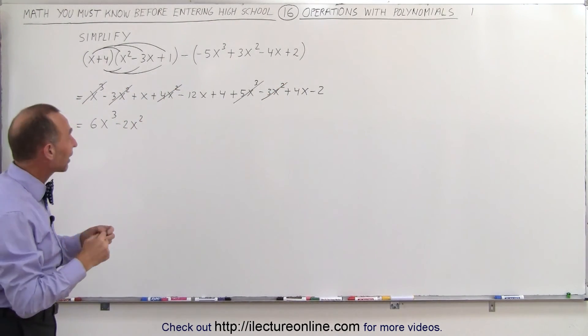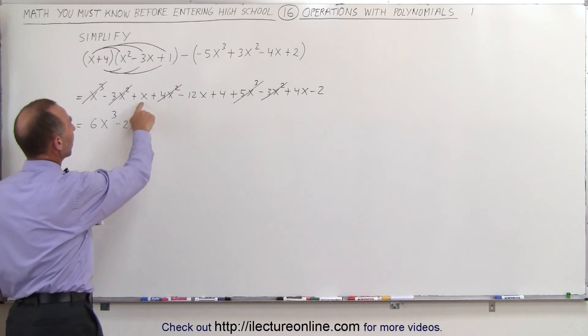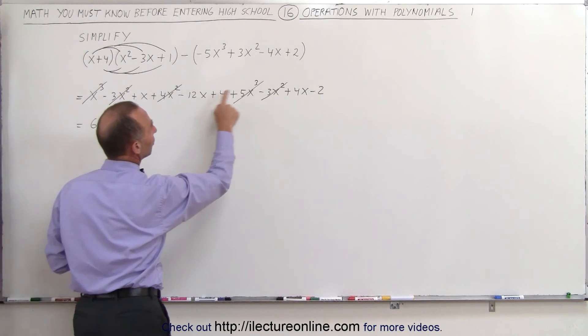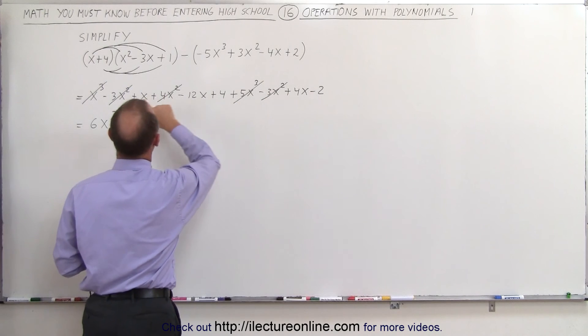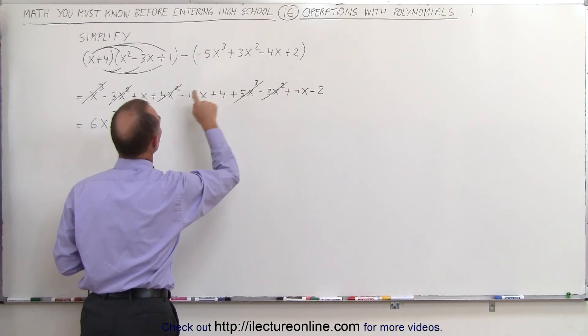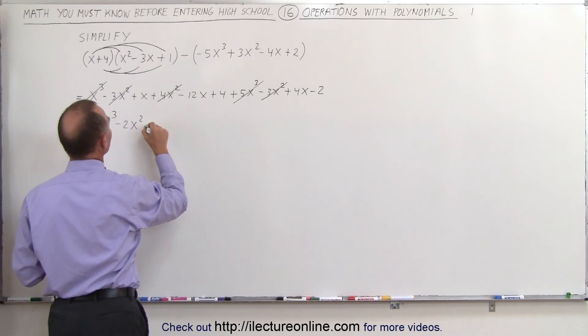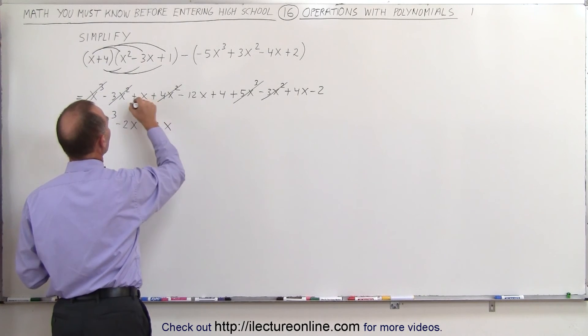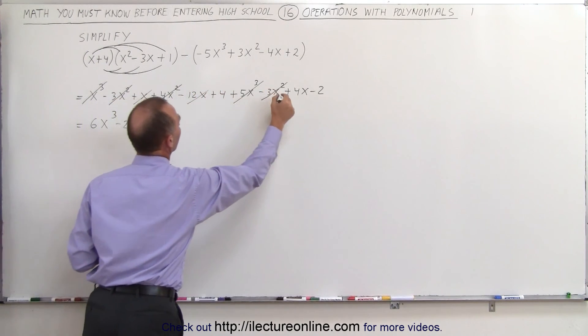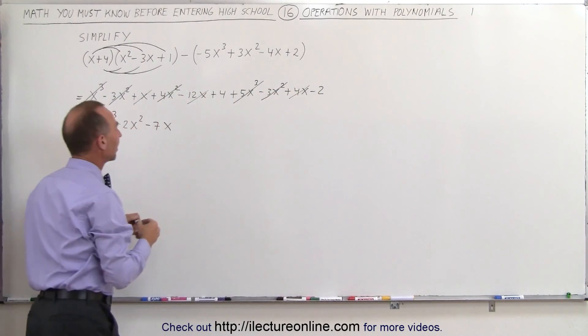Now we look for all the terms that have x to the first power. Plus x minus 12x plus 4x. So 1 plus 4 is 5, subtract 12 gives us minus 7x. We can cross out all the x to the first terms, and all we have left is numbers.